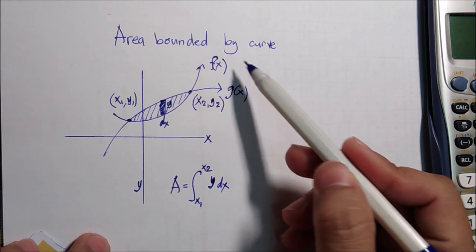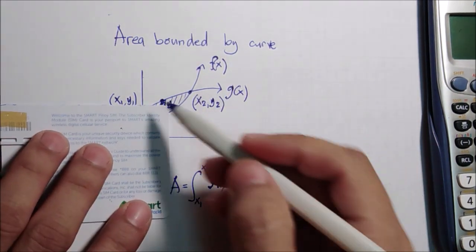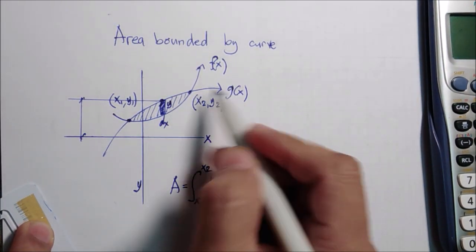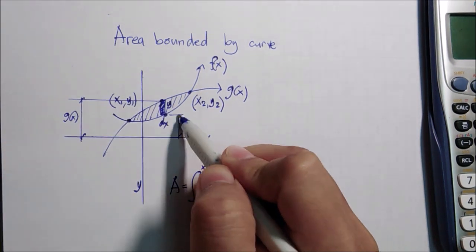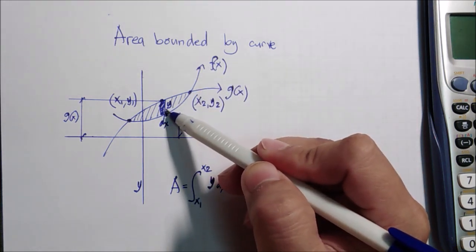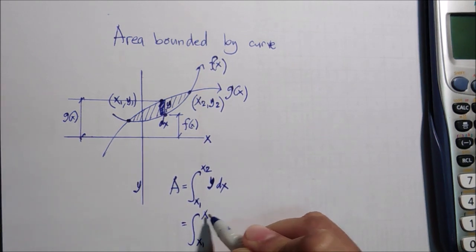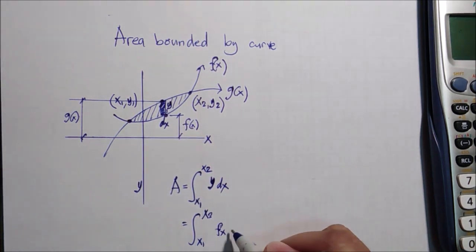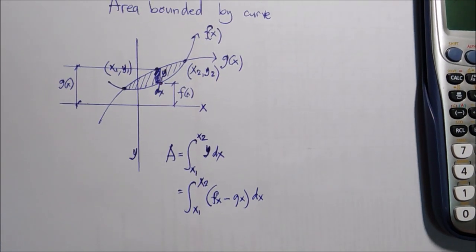The value of y is the y of the first function minus the y of the second function. So from this graph, that function is g(x) and the second one is f(x). Therefore, y equals g(x) minus f(x), giving us the integral from x1 to x2 of [f(x) minus g(x)] dx.